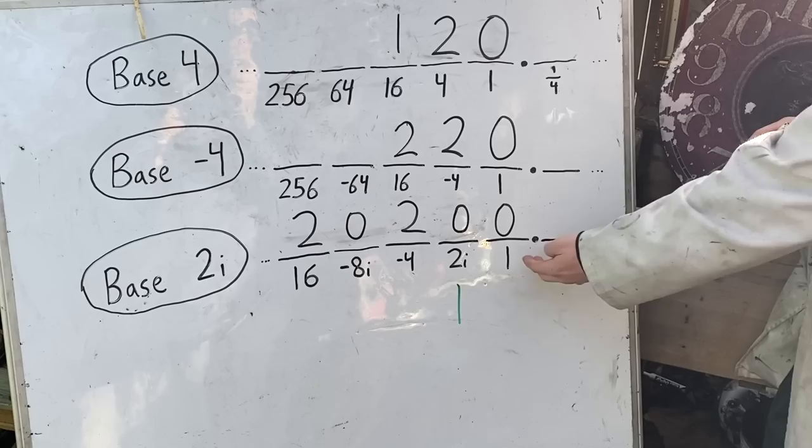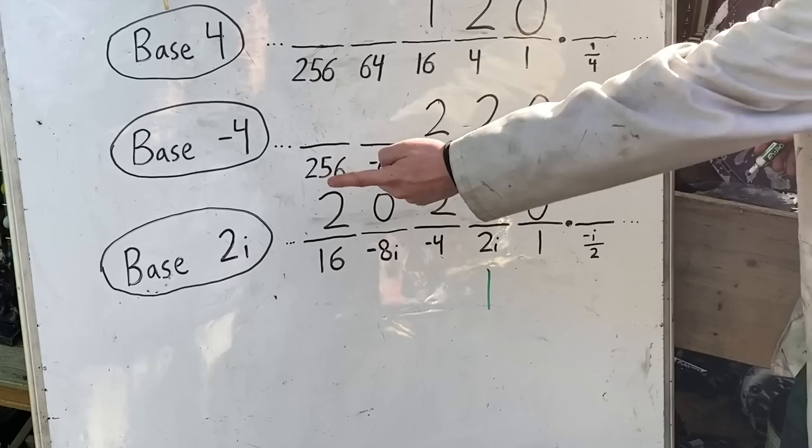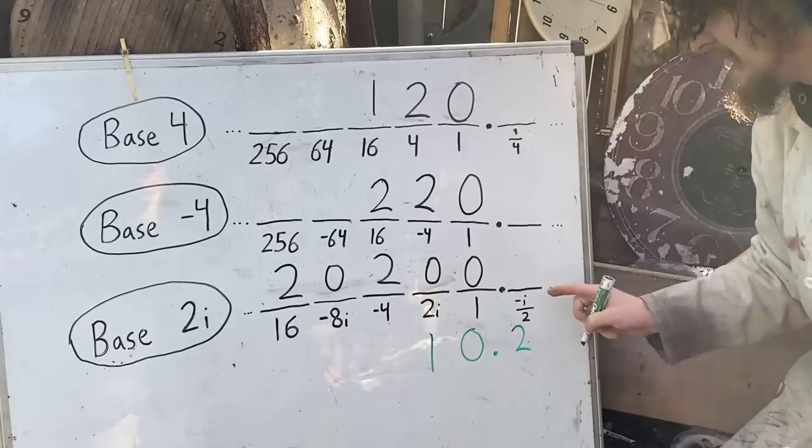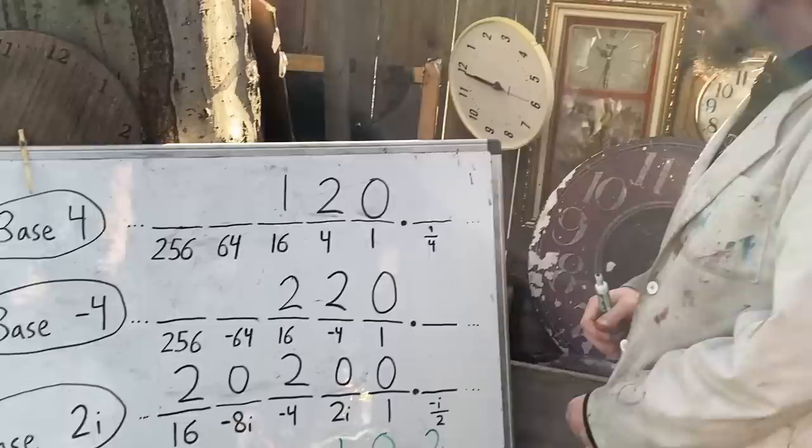And for the imaginary or complex numbers in base 2i, we will have to extend one place beyond this point sometimes to the spot that represents the negative first power of the base, or in this case, negative i over 2. Like to make the number i, I would use one of the two i's, none of the ones, and 0.2 of the negative i over 2's. And 1 0.2 is how base 2i could represent i.